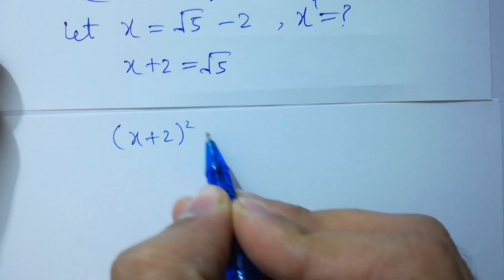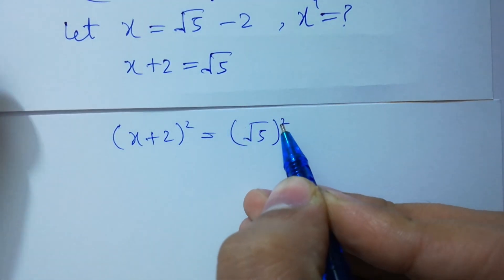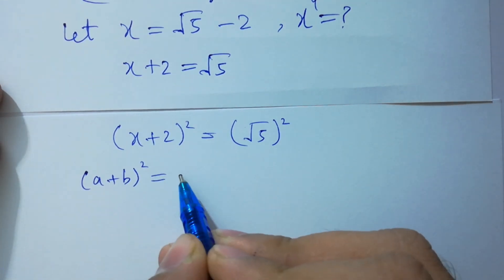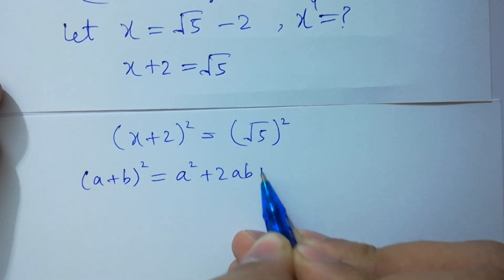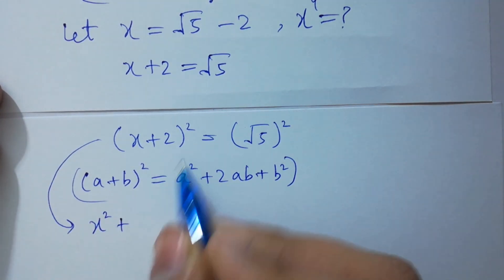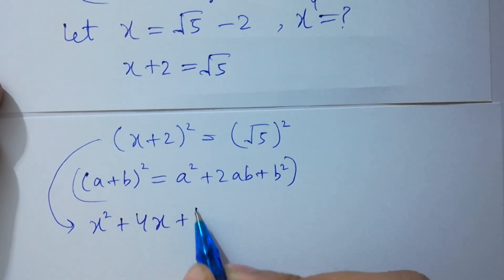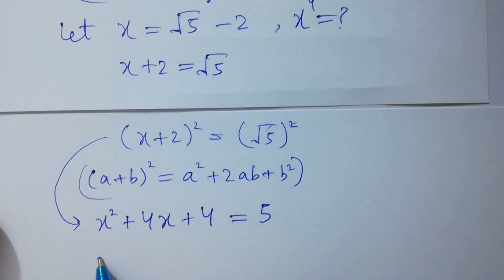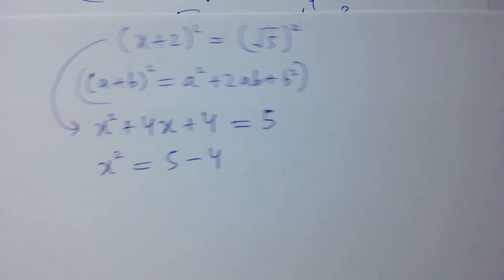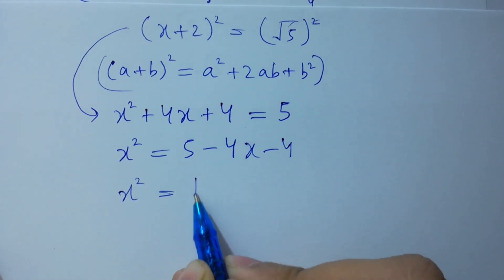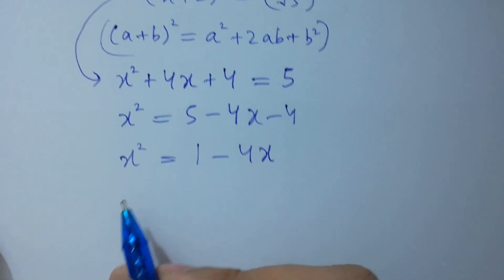We get (x+2)² = (√5)². Using a plus b whole square equals a squared plus 2ab plus b squared: x² plus 4x plus 4 equals 5. Therefore x² equals 5 minus 4x minus 4, which is 1 minus 4x. To calculate x to the power 4, again take square on both sides.